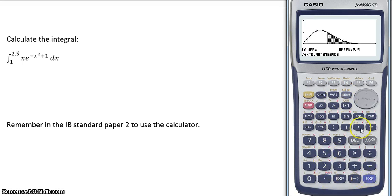Now execute. This is the area that you are calculating from 1 to 2.5. And the area is 0.493. Remember to use three significant figures.